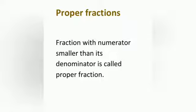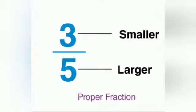Proper fractions are fractions with a numerator smaller than the denominator. For example, three by five: three is smaller and five is larger.